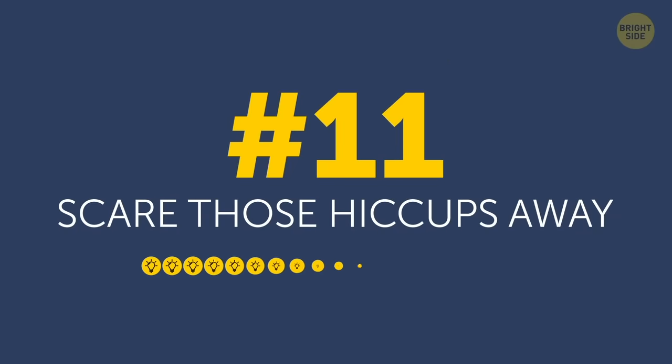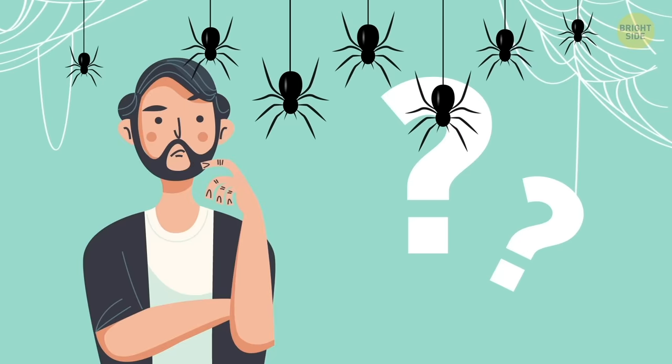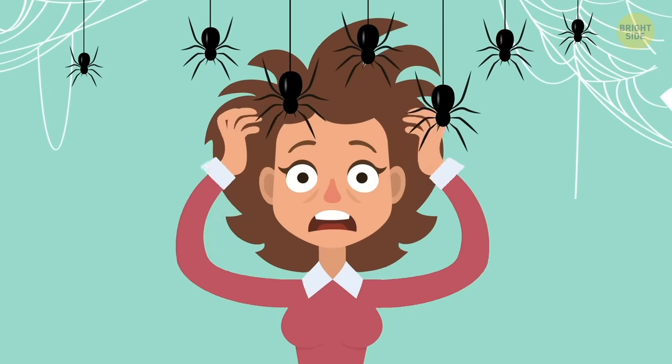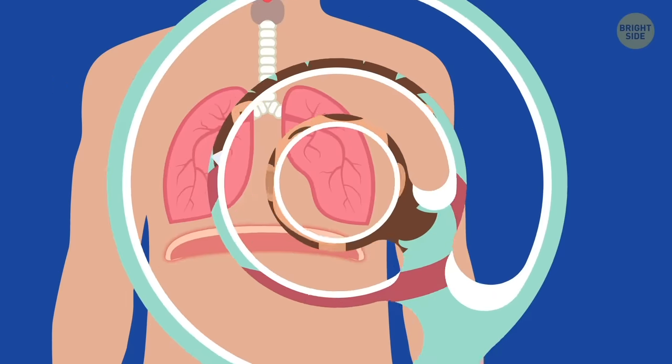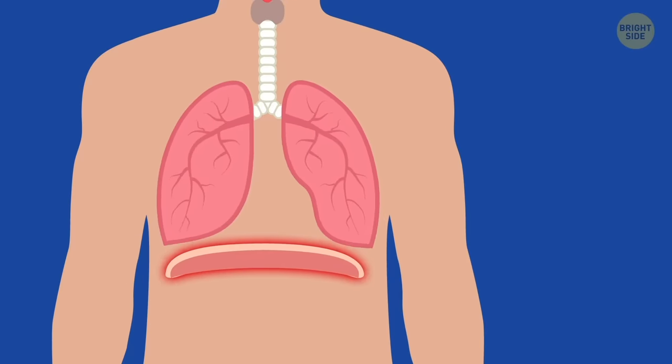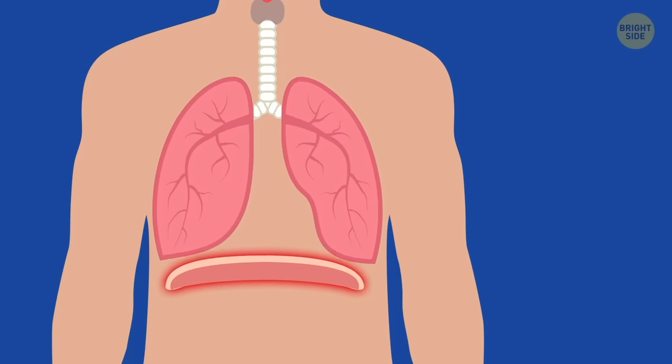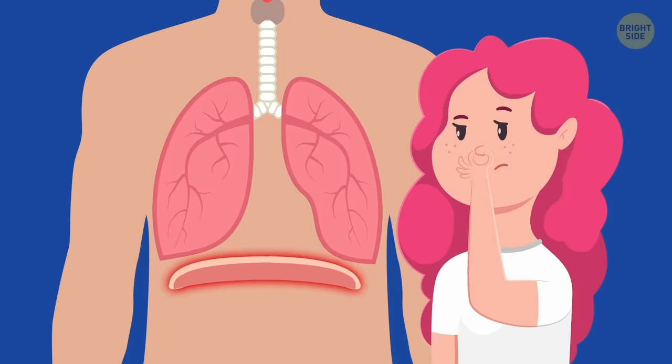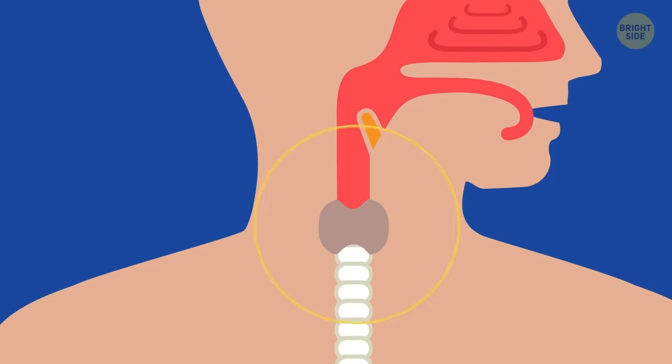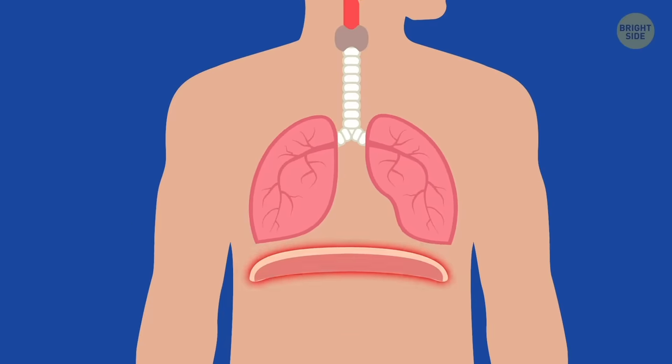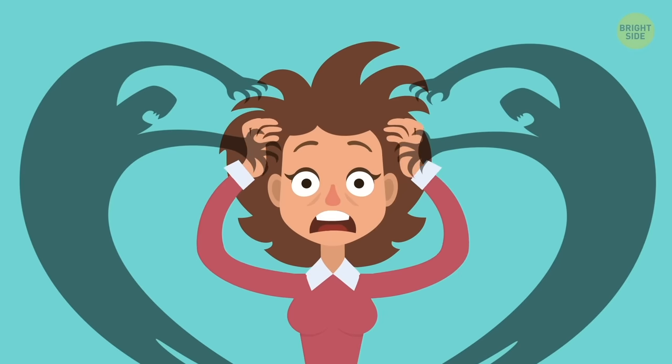Scare those hiccups away. Does this old wives' tale work? Well, in theory it does, but the scare must be genuine – you can't know it's coming. When you get startled and jump, the release of adrenaline and your body tensing up both affect the diaphragm, which will interrupt your breathing pattern. Similarly, your sharp intake of breath as you gasp will interrupt your breathing pattern too, and in turn your hiccups. I'm sure you've got a friend or two who would love to give you a good scare.